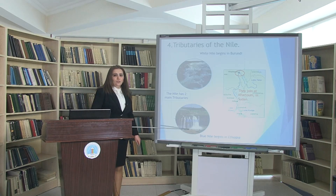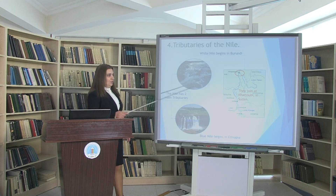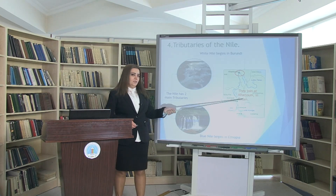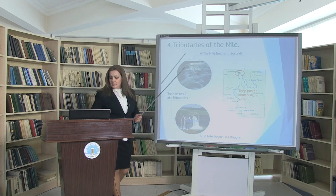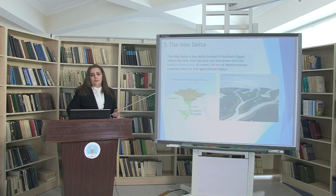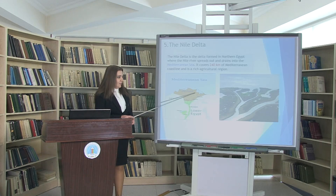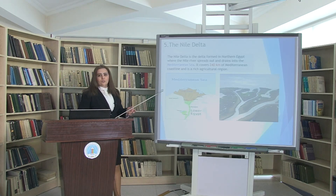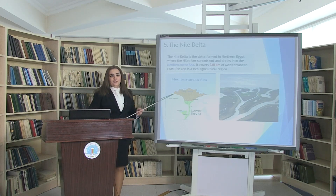Now, the tributaries of the Nile River. First of all, the Blue Nile, and the second one is the White Nile. They join together at the territory of Khartoum, in the territory of Sudan.